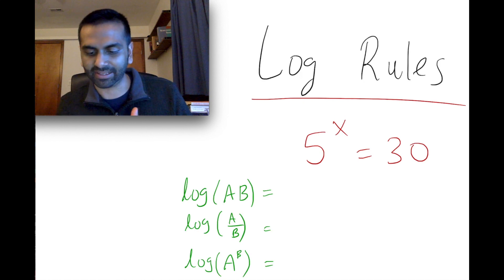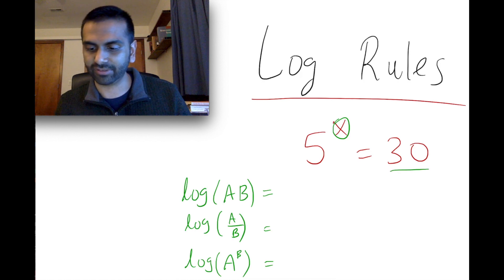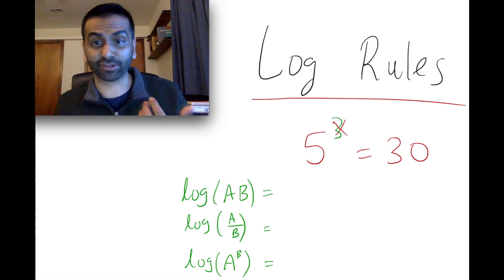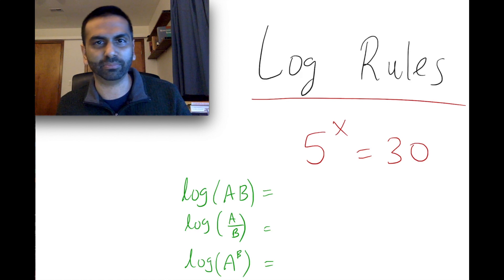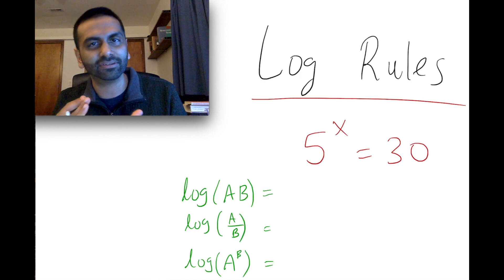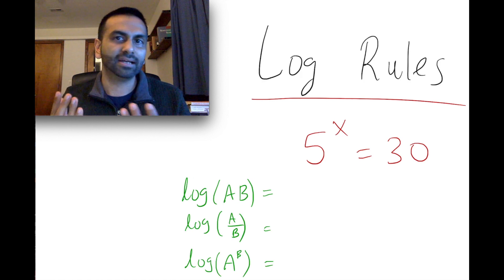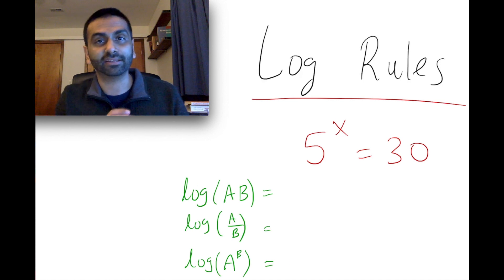You can try to guess a little bit — we know that 5 squared is 25, which is pretty close, so x has to be more than 2. But 5 to the third power is 125, that's way too big. So we kind of know x is a little bit more than 2, but if we wanted a precise decimal, we wouldn't be able to do that using these rules.